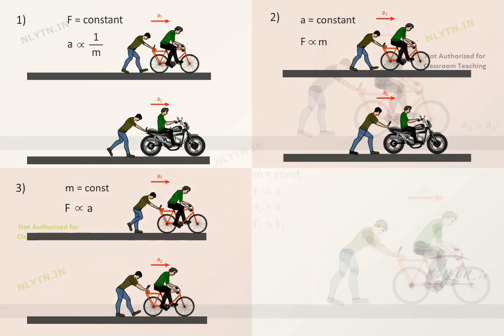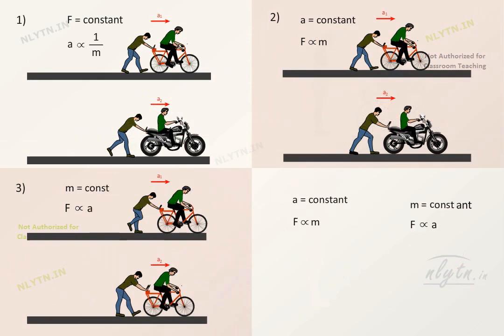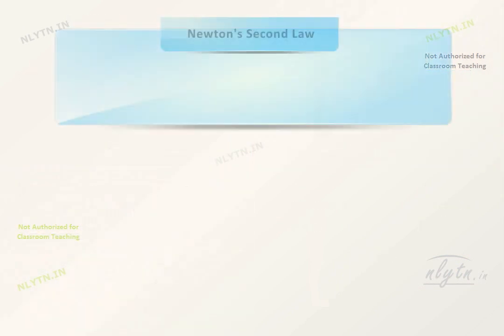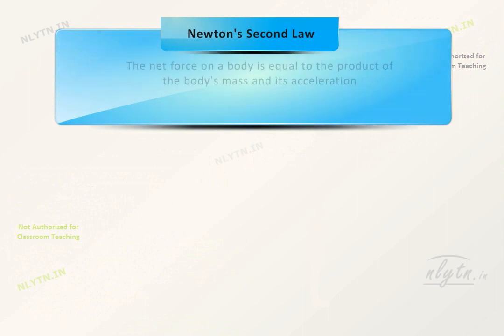Combining these two observations, we can say that force is proportional to mass into acceleration. In fact, Newton's second law states that the net force on a body is equal to the product of the body's mass into its acceleration.